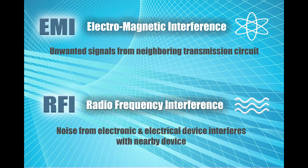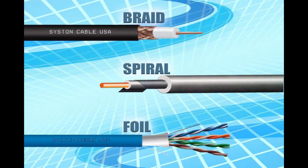The results are fewer data errors and increased transmission speed. Cable shielding usage is determined by the application. There are various types of cable shields available in the market. The three most popular types for low-voltage signal cables are braided, spiral design, or metal-coated mylar or foil shield.